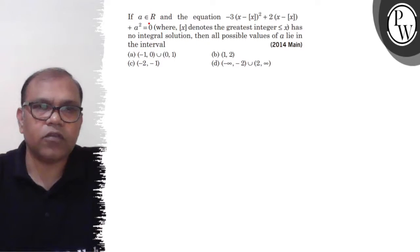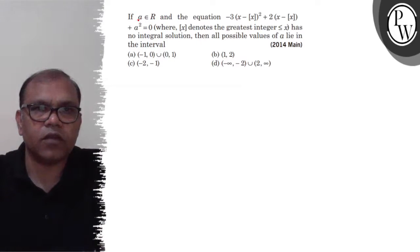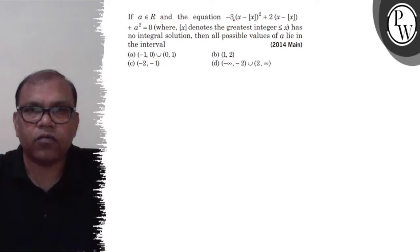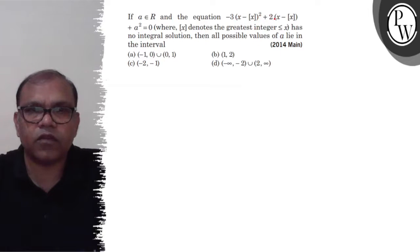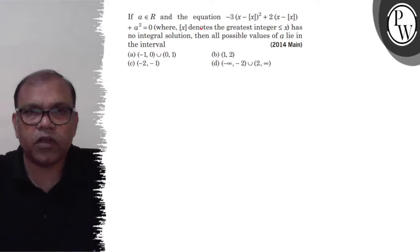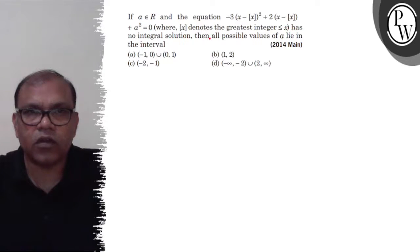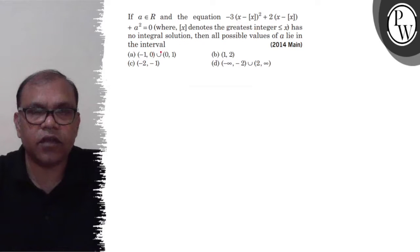Hello Bacho. Let us see the question. The question says: if a belongs to R and the equation minus 3 into (x minus [x]) whole square plus 2 into (x minus [x]) plus a square equals 0, where [x] denotes the greatest integer less than or equal to x, has no integral solution, then all possible values of a lie in which interval?